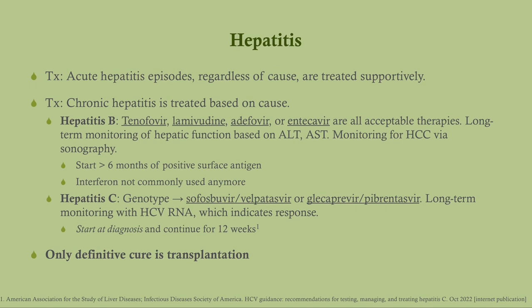For treatment, hep B is typically monotherapy — tenofovir, lamivudine, adefovir, and entecavir are all acceptable; none is more correct than the others on a test question. We monitor long-term with ALT and AST, and screen for hepatocellular carcinoma via sonography starting six months after the positive surface antigen. We only treat patients with chronic hep B. Interferon used to be given but is no longer common because the side effects are severe — interferon causes flu-like symptoms, making patients feel quite ill.